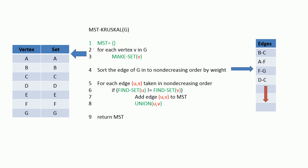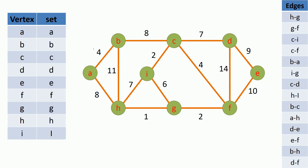This is the graph I am going to run our pseudocode on. On the left side you can see the table which contains vertices and the current set that each vertex belongs to. On the right side you have the list of edges sorted in minimum to maximum order by weight.